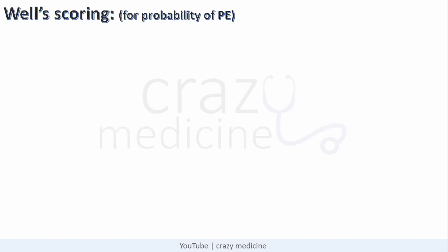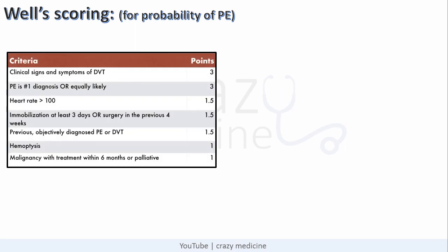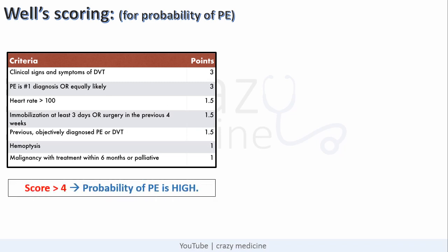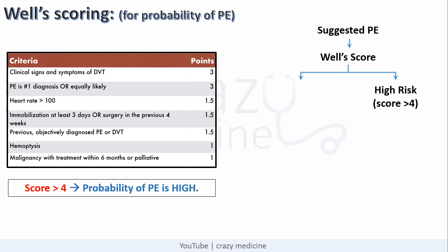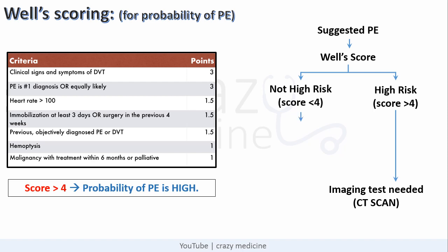Next is scoring of pulmonary embolism. To know the probability, the Wells scoring system is used. The points are given in this table. A score more than 4 is considered high probability. When pulmonary embolism is clinically suspected, a Wells score is done. If high risk — score more than 4 — an imaging test, i.e. CT scan, is required. If not high risk — score less than 4 — a D-dimer test is performed. If D-dimer is normal, it is not pulmonary embolism; if elevated, imaging is needed.